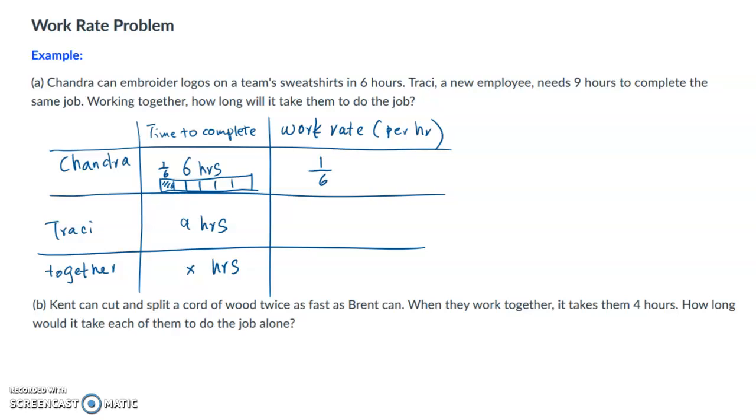Similarly, Tracy will complete one-ninth of the whole job, and when they work together, for each hour they will complete one over X of the whole job. So that means for each hour how much Chandra completed plus how much Tracy completed should be equal to how much they have completed together. So I can set up the equation: one-sixth plus one-ninth should be equal to one over X.